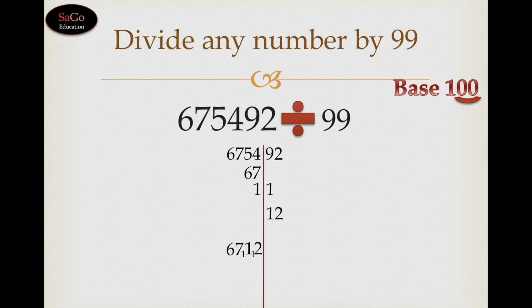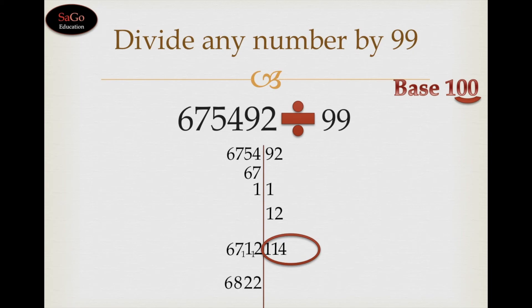Now 2 plus 2 plus 2 is 4; 9 plus 1 plus 1 is 11. Write 11. Now we adjust carries: write 2 as it is, 1 plus 1 is 2, write 2; 1 plus 7 is 8, write 8; and 6 as it is. Now check the remainder part — it has come out to 114, and 114 is a bigger number than the divisor, which should not happen.